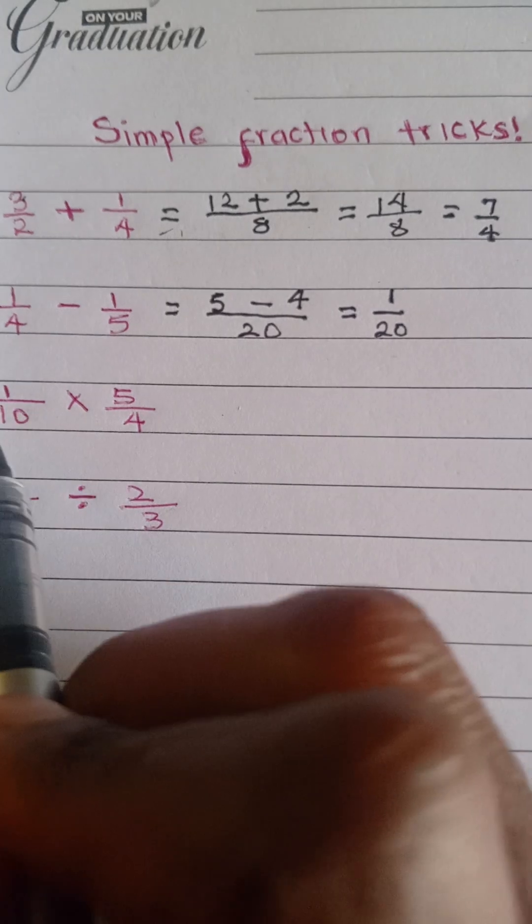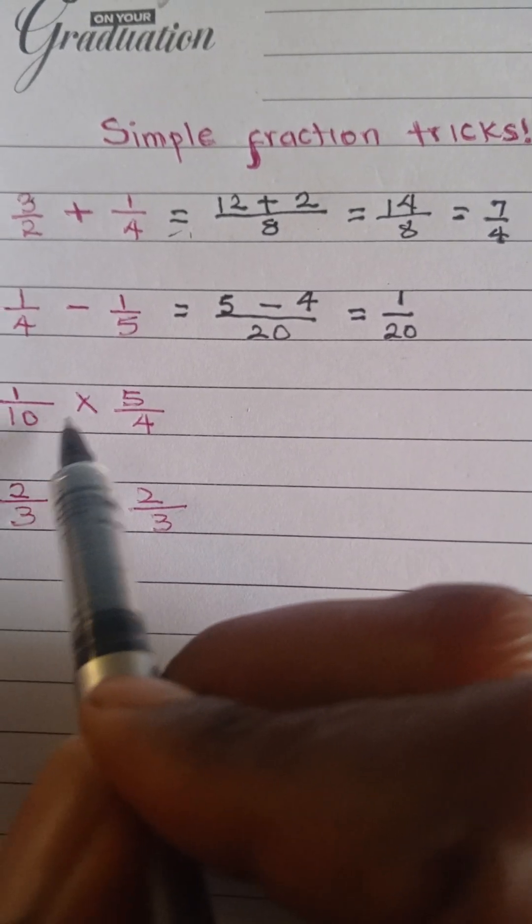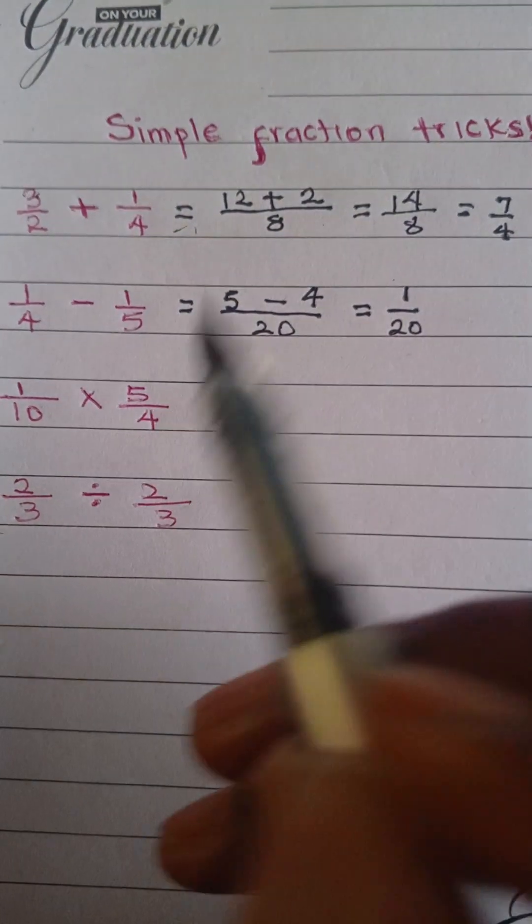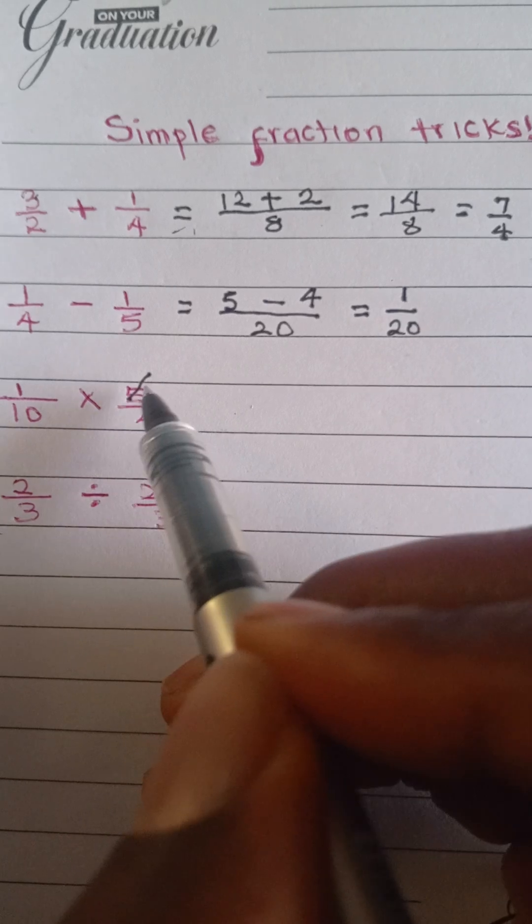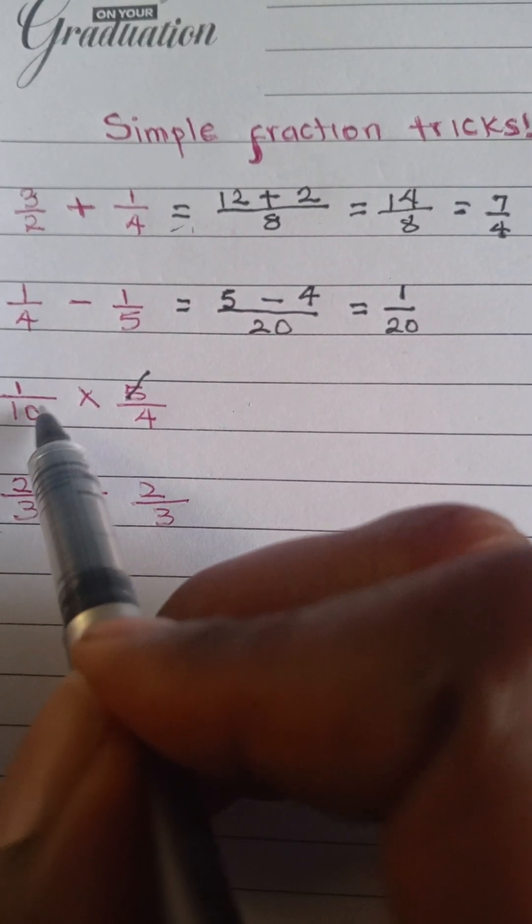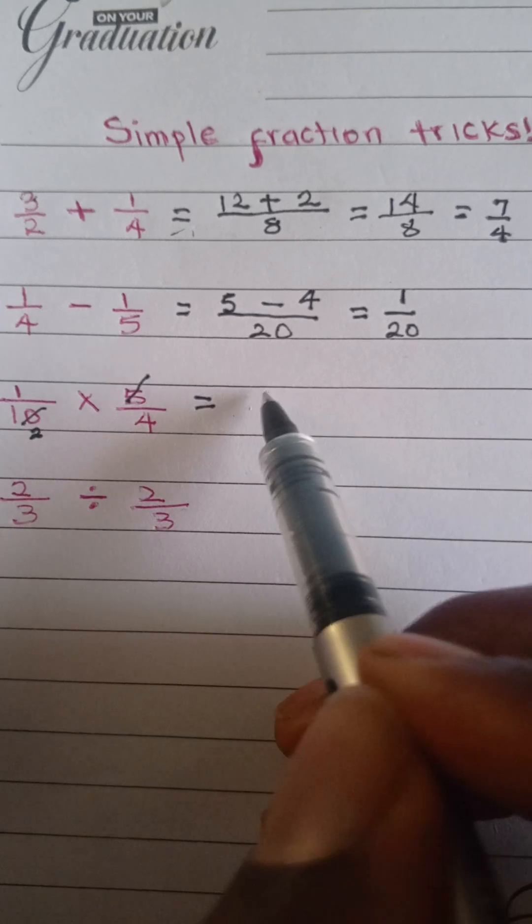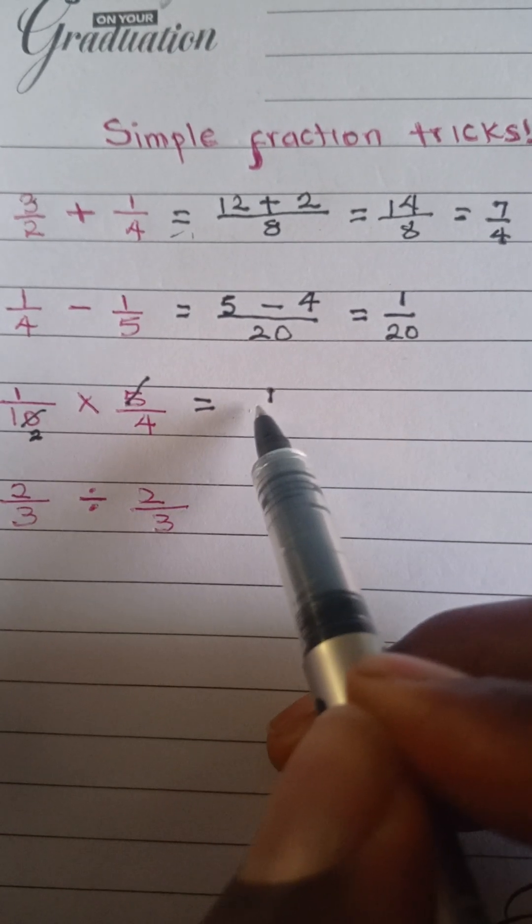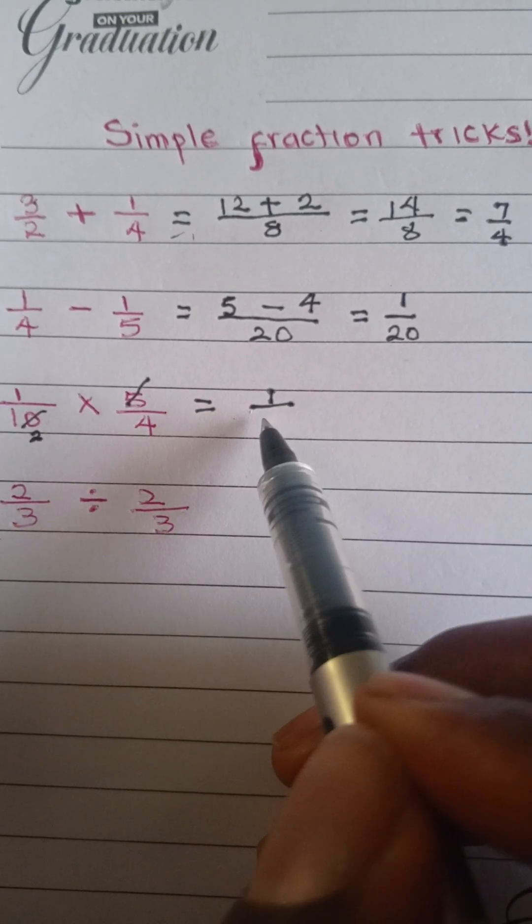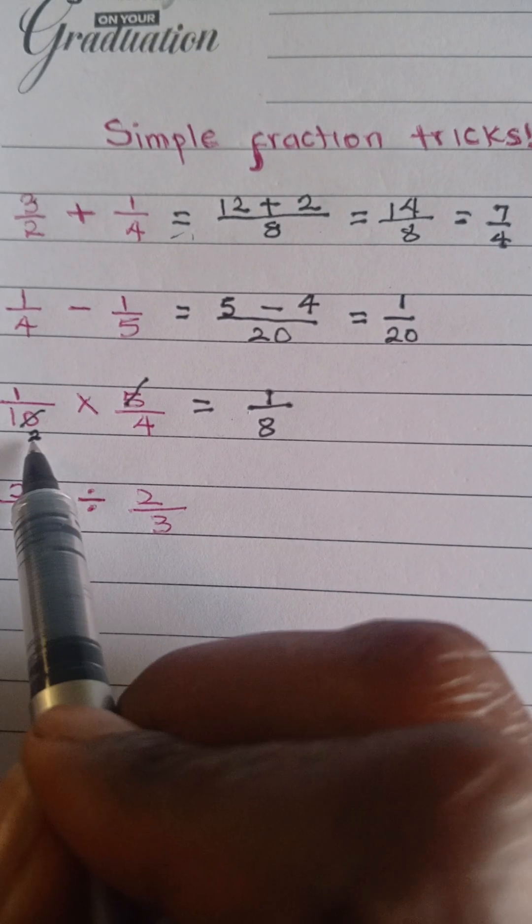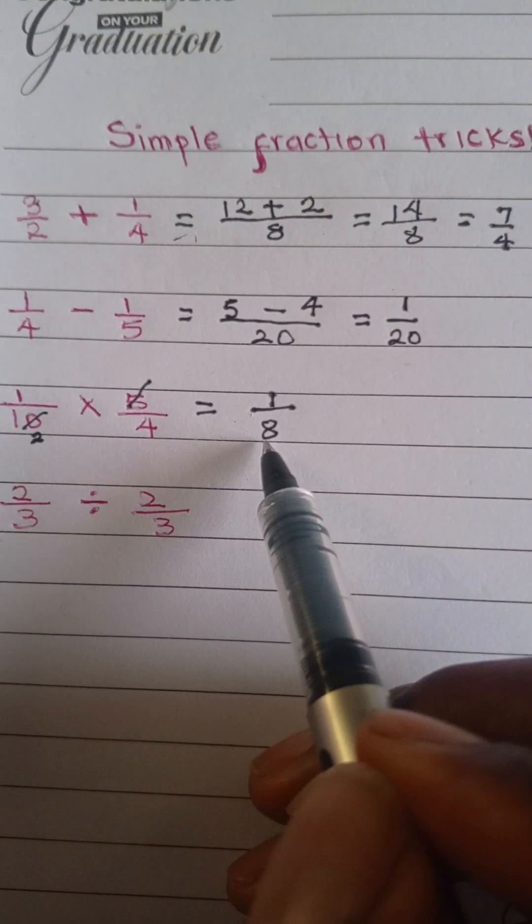The next one is 1 over 10 times 5 over 4. So 5 here divides into 10 to give you 2. So you're going to have 1 over 8, because 2 times 4 is equal to 8.